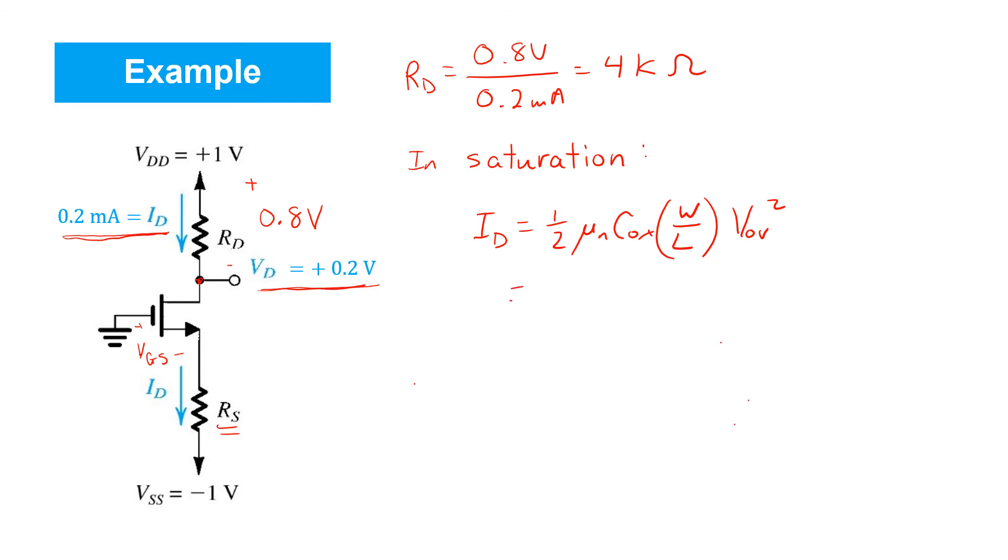And then we just have to add the threshold voltage to find VGS. Now, in this case, let's say we're told that mu NC aux is 400 microamps per volt squared. And let's say W is 15 micrometers and L is half a micrometer. And of course, we can see right from the schematic that ID is 0.2 milliamps. So with those device constants and the drain current, we can simply rearrange and solve for VOV.